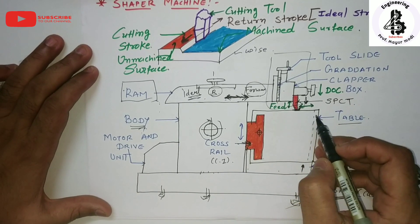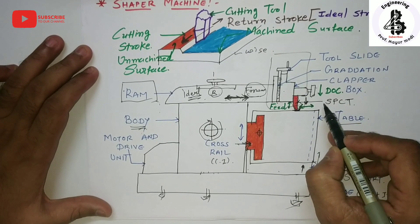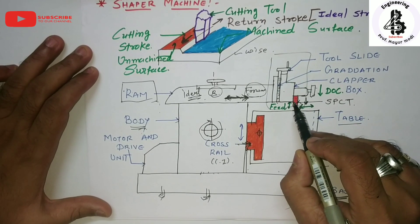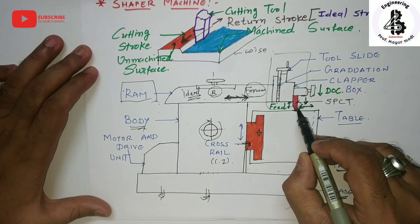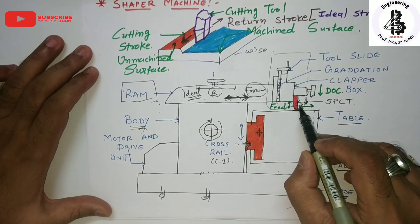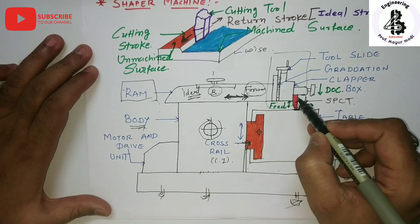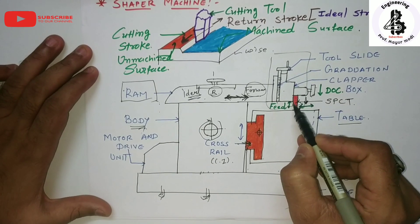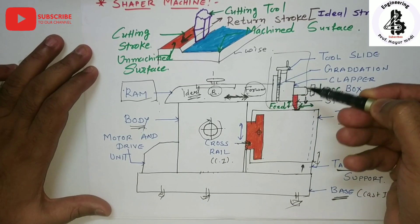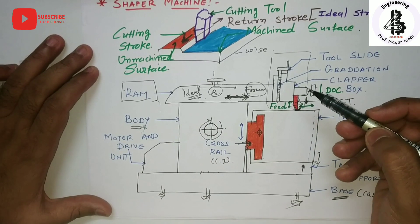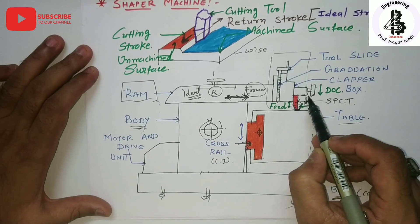The last part is the tool head, which is attached to the front portion of the RAM and holds the tool rigidly. It also provides vertical as well as angular movement, so you can easily make angular slots with the help of the shaper machine.